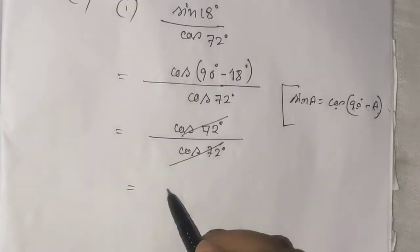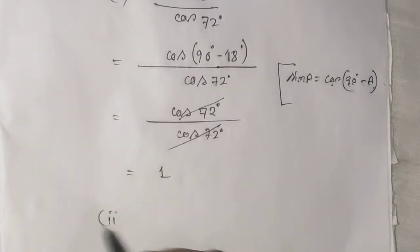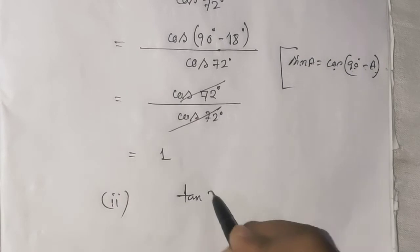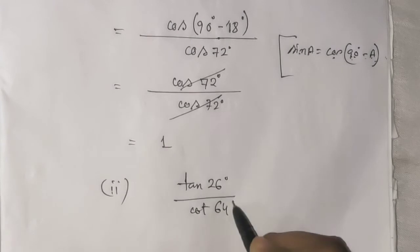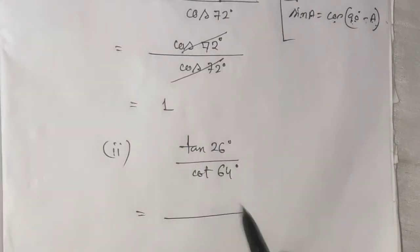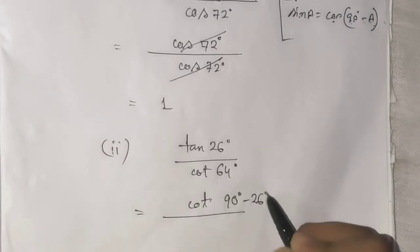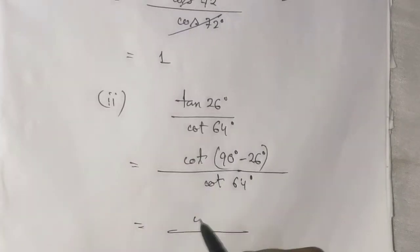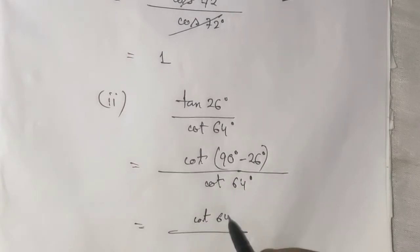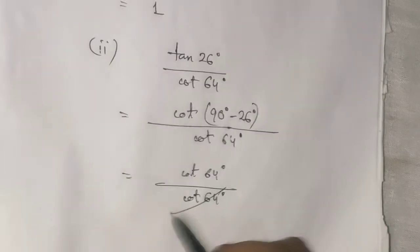Example number two: tan26° divided by cot64°. We can write cot64° as cot(90° - 26°), which equals tan26°. So the answer is tan26° divided by tan26°, which equals 1.